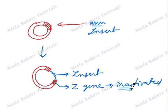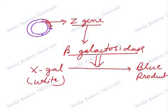Now let us go back to our original thing. If this Z gene gets inactivated, if it gets inactivated means beta galactosidase will also not be produced. If beta galactosidase is not there, white substance will remain white.